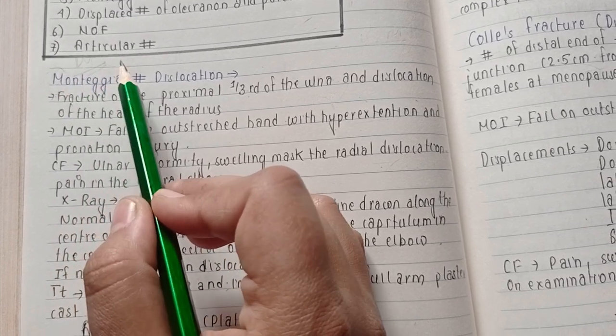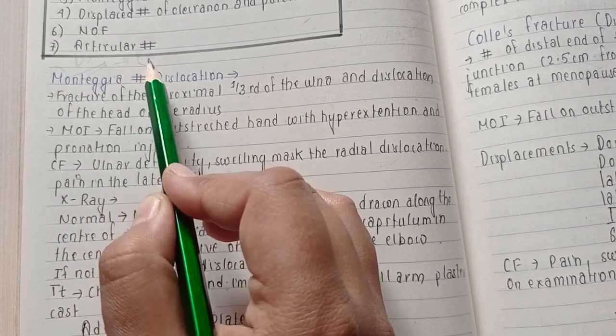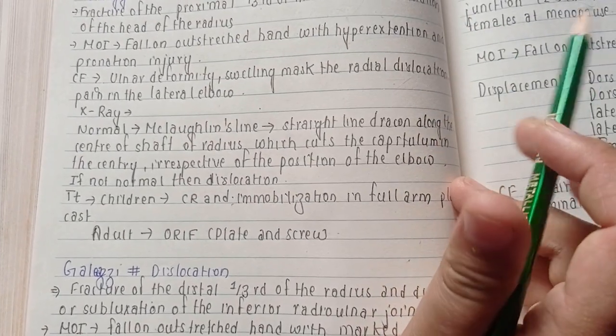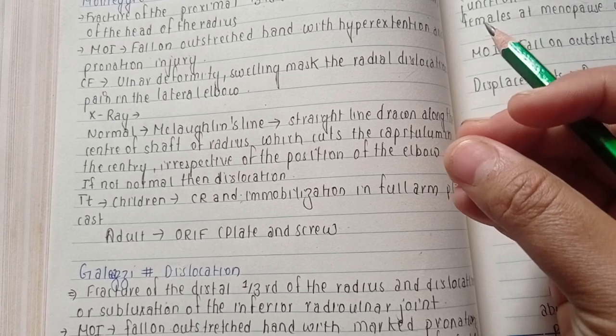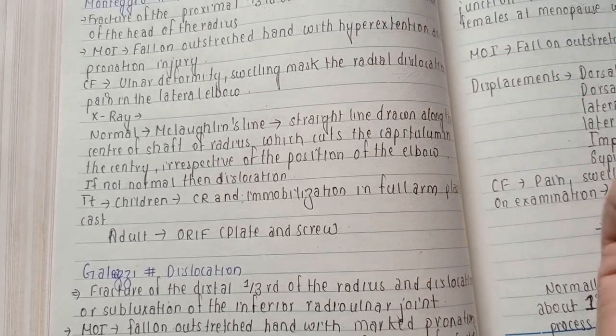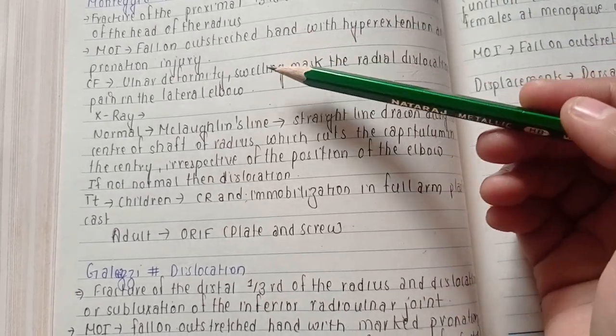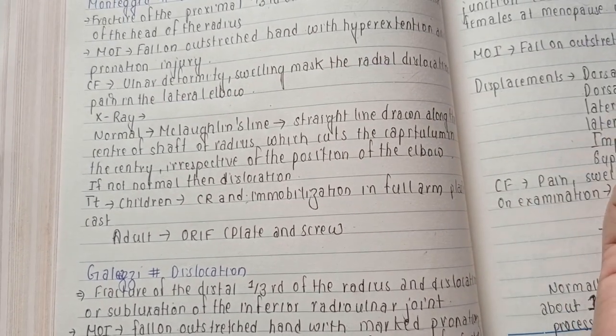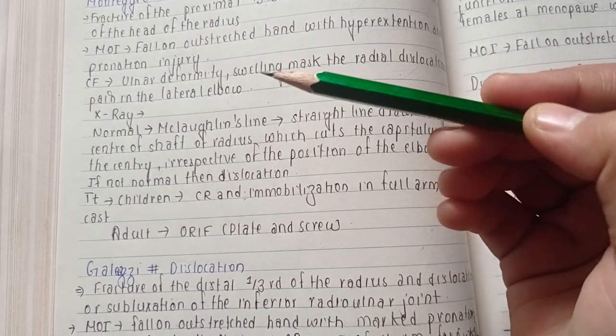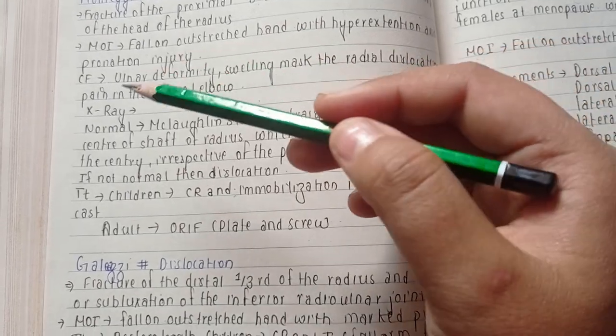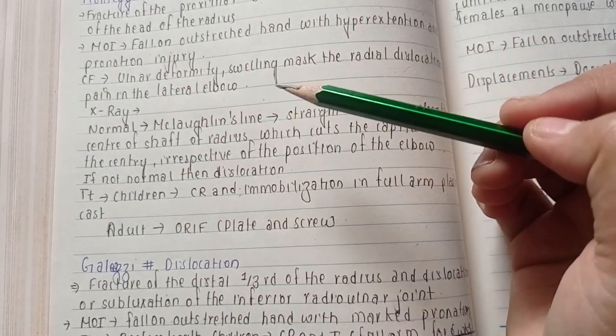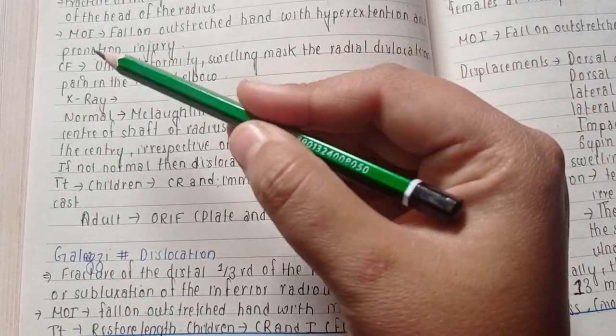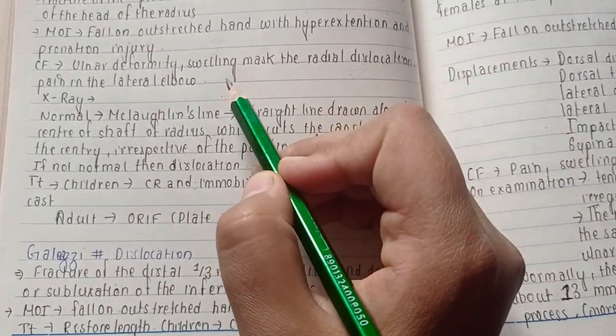Talking about clinical features: when there is fracture in any part of our body, there is obviously swelling and some pain. So here in this fracture also, the clinical features are the same - there is swelling and there is pain. And also, when the fracture is displaced, we will obviously have deformity. So there is ulnar deformity, there is swelling...